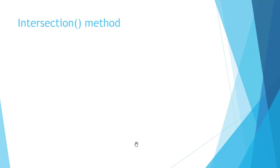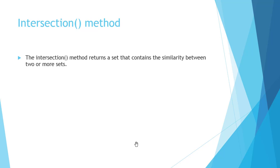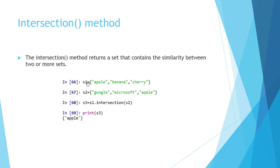Next is the intersection method. The intersection method returns a set that contains the similarity between two or more sets — that is, the common elements between the two sets. For example, s1 contains apple, banana, and cherry, and s2 contains google, microsoft, and apple. We call s1.intersection(s2) which returns another set s3. The common element between s1 and s2 is apple, so s3 contains the apple element. We discussed some important methods of the set and how to remove and add items from the set.